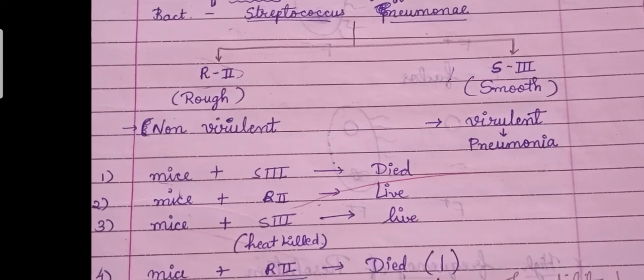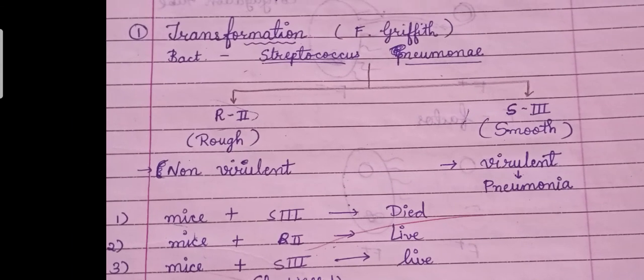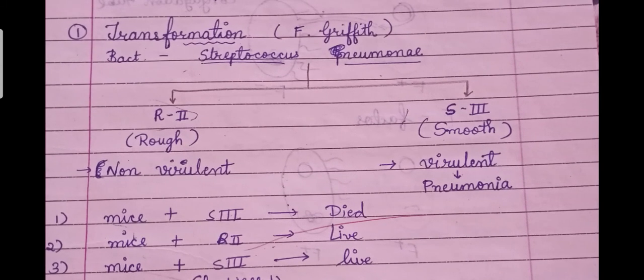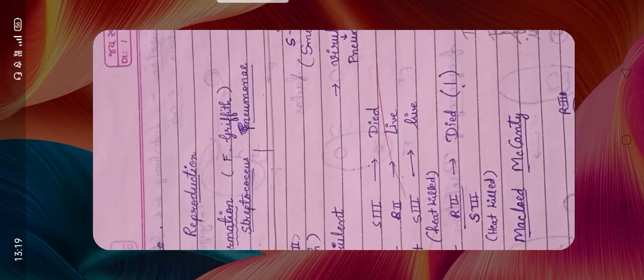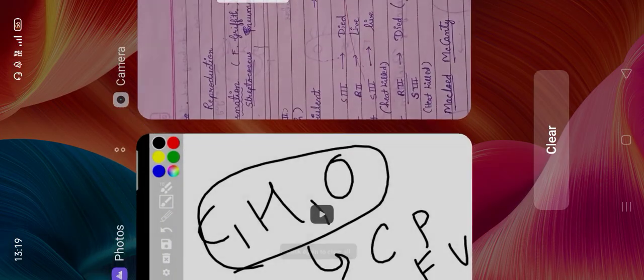In the first experiment, Frederick Griffith injected smooth bacteria into mice. All of the mice died. Let me explain exactly how this happened.